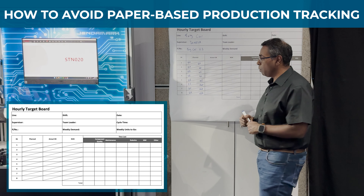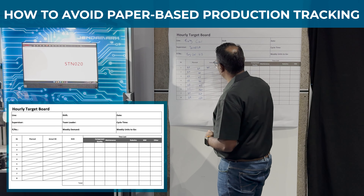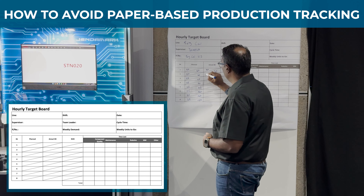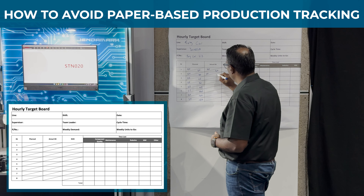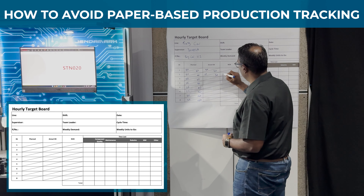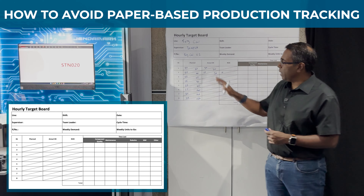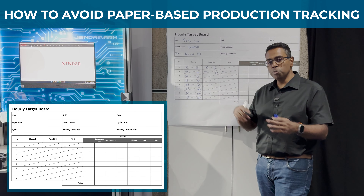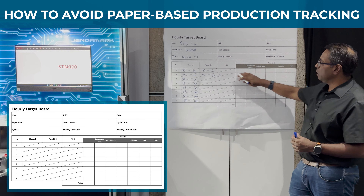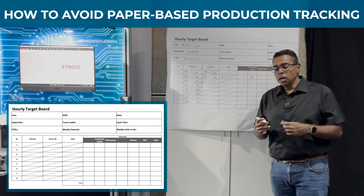It's a very manual process. As they build components by hour, they write how many were produced — let's say in the first hour they made 20, which is according to target, but the next hour they only made 10, so the cumulative total is 30. And let's say there were 10 NOK parts from that particular hour. As the day goes on, the supervisor is busy filling this information in.